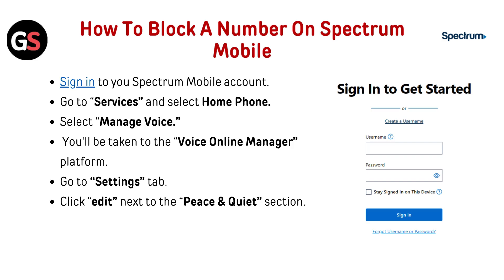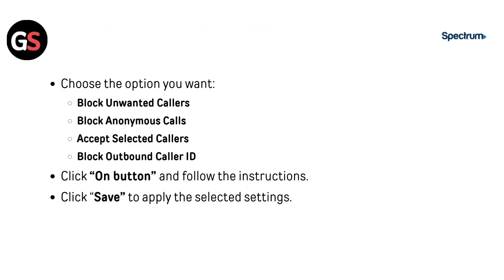Click Edit next to the Peace and Quiet section. Choose the option you want, such as block unwanted callers, block anonymous calls, accept selected callers, or block outbound caller ID. Click the button and follow the instructions, then click Save to apply the selected settings.